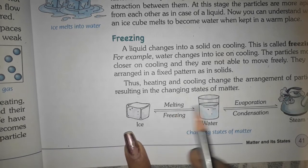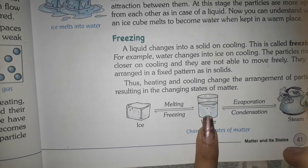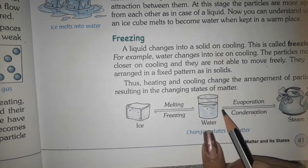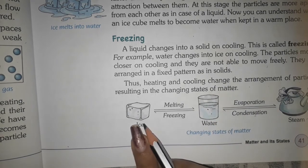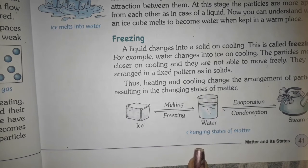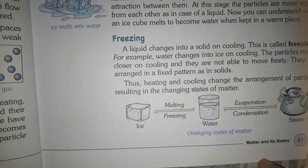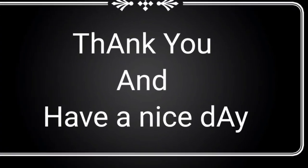Ice को melt करो तो water बन जाएगा। Water का evaporation किया तो steam/vapor बन जाती है। Steam का condensation किया तो water बन जाएगा। Water को freeze किया तो ice में convert हो जाएगी। यही था — Changing States of Matter. In the next video we will discuss the next topic. Thank you very much and have a nice day.